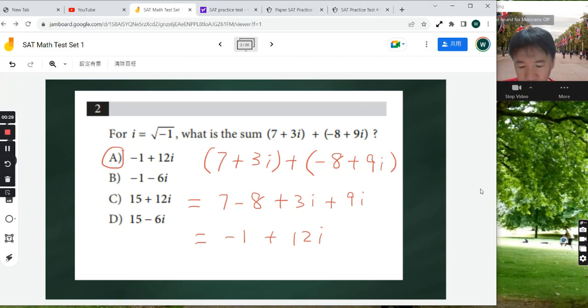Question number 2. We know the imaginary number i is equivalent to the square root of negative 1. So that's an imaginary number.